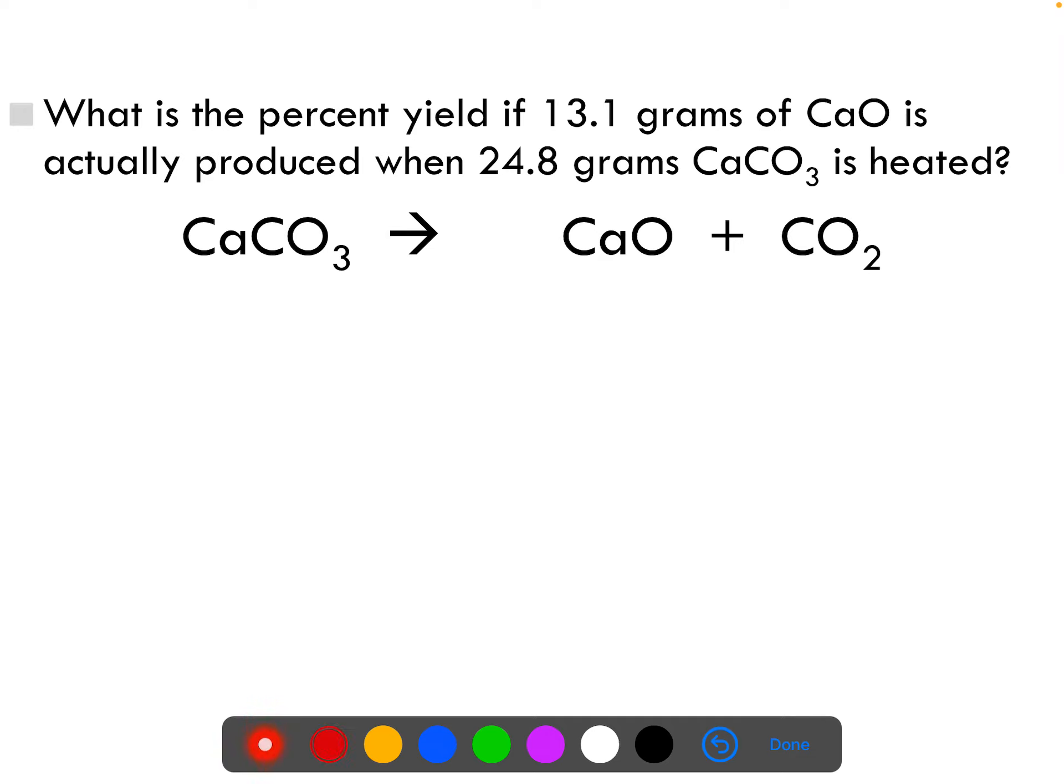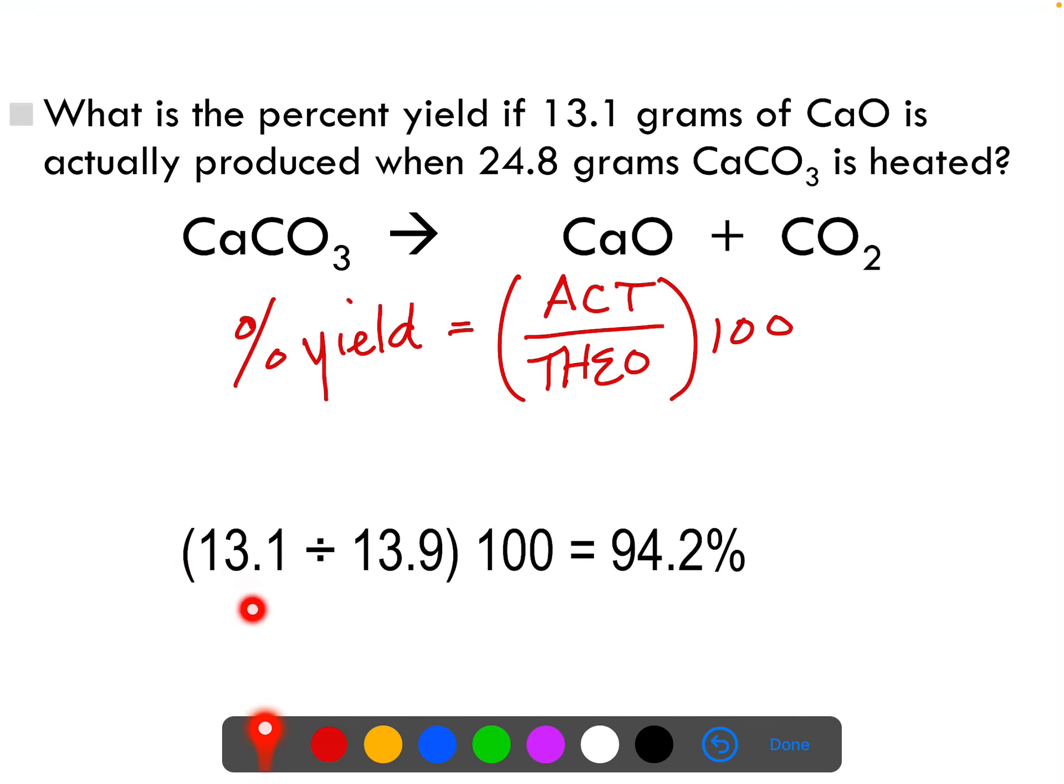Percent yield says that we have the actual amount divided by the theoretical amount and we multiply that times 100. So we actually made 13.1 divided by theoretically we should have made 13.9 all times 100. So we end up with a percent yield of 94.2%, which is a pretty good percent yield. That's pretty high.